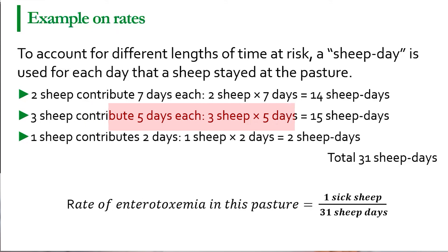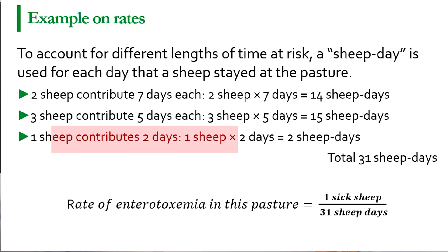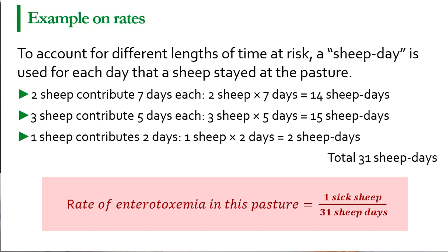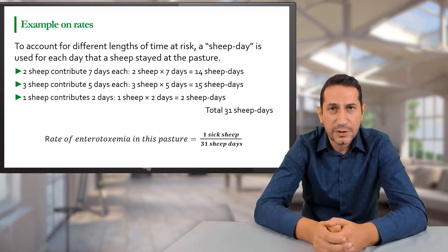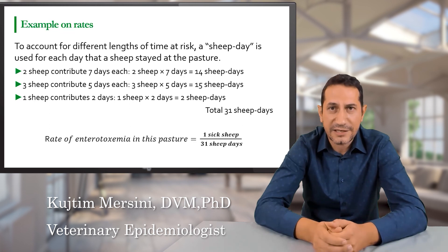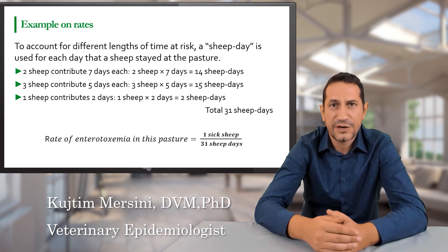To account for different exposure times, we use the unit 'sheep-days.' Two sheep for seven days each gives 14 sheep-days; three sheep for five days gives 15 sheep-days; one sheep for two days gives 2 sheep-days — totaling 31 sheep-days. The incidence rate of enterotoxemia in this pasture is therefore one sick animal per 31 sheep-days. This concept of animal-time will be expanded further in a later lecture on incidence.